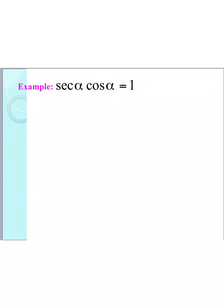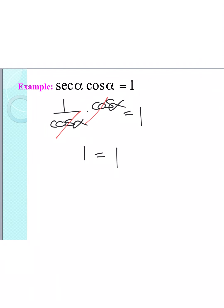I'm going to start with the left side, which is secant of alpha times cosine of alpha, because that is definitely more complex. I'm going to try and rewrite things to get them to simplify to exactly one. Using my reciprocal identities, I know that secant is the same as 1 over cosine. So I write that, then times cosine. I can cross-cancel the cosines, and I end up getting one equals one. We only worked on the left side — I got the left side to simplify all the way down to one, and the right side was also one. I did not change the right side at all.